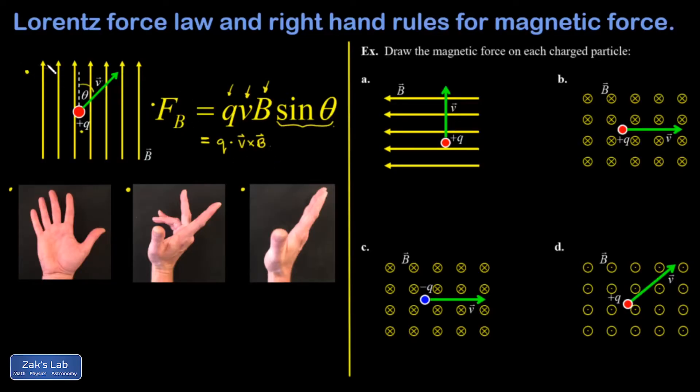In our original picture here, the only way to be perpendicular to both the magnetic field and the velocity is for the force to either be pointing out of the page or into the page. And the right-hand rule is designed to help you make that decision.